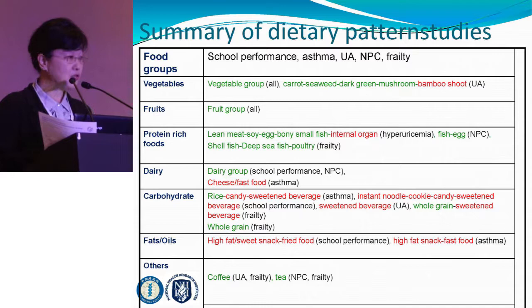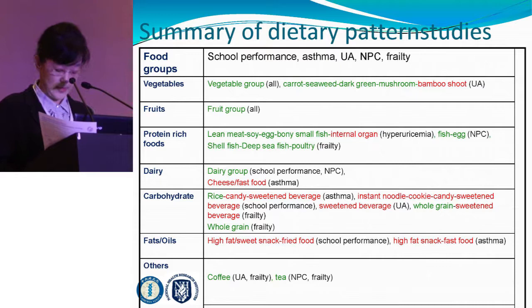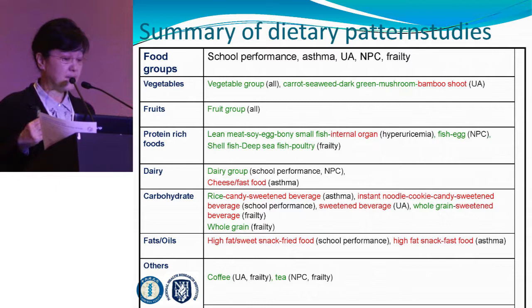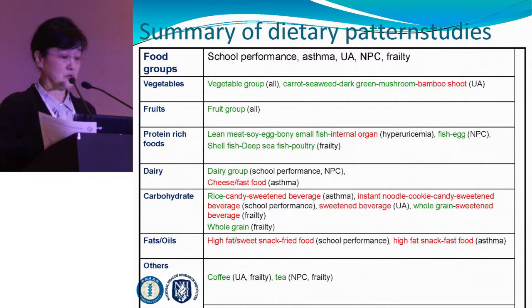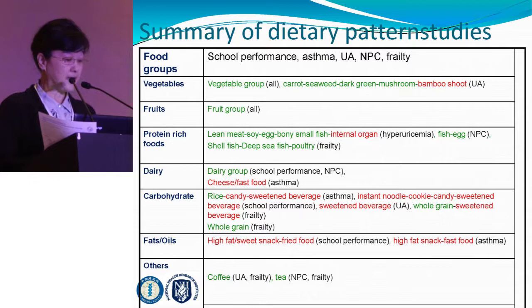In summary, putting all the findings together shows something very interesting. Vegetables are protective across all the syndromes described — except bamboo shoot, which is related to uric acid due to its purine content. Fish is also protective across all the syndromes described. In line with protein-rich foods, you can see that internal organs are adversely associated with conditions, while shellfish, deep-sea fish, poultry, fish, and eggs are protective for different conditions including nasopharyngeal cancer and frailty.